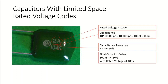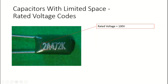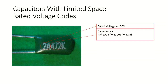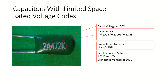Let's take a look at another capacitor with a similar code. This one also has a voltage rating of '2A', so that means 100 volts based on our previous code. For the rest of the capacitor, the capacitance value starts with '47' as the first two digits, then we have a '2', so that's 47 times 100 as our multiplier. The value is in picofarads, so that gives us 4,700 picofarads, which is the same as 4.7 nanofarads. The 'K' gives a tolerance of plus or minus 10%. So the final value is 4.7 nanofarads with plus or minus 10% tolerance and a rated voltage of 100 volts.